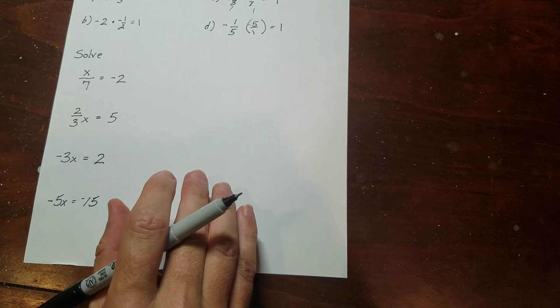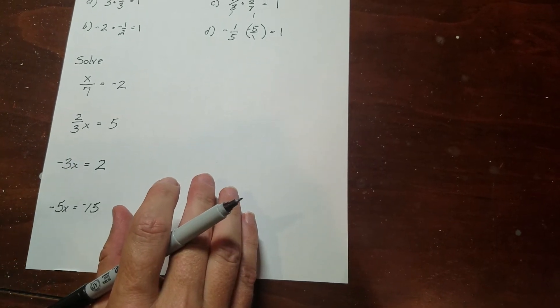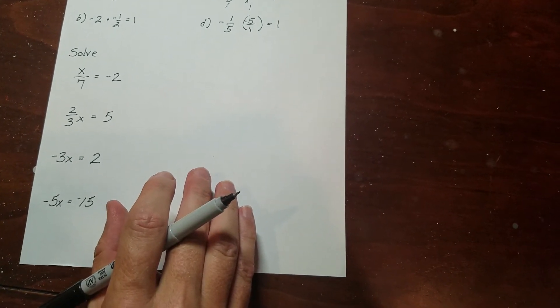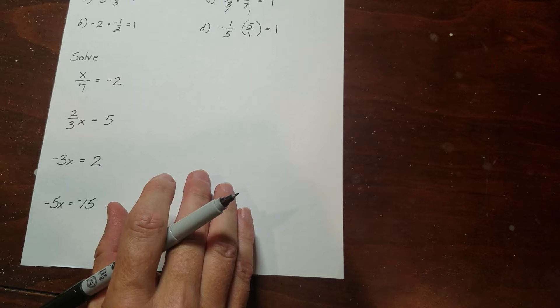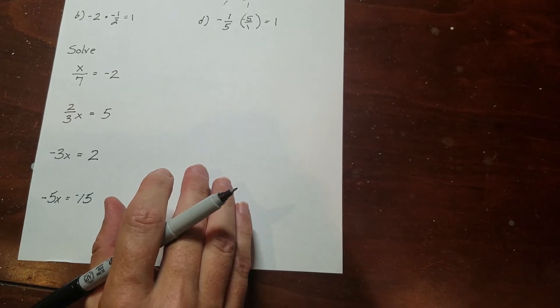We use the multiplicative inverse to isolate x, which is the name of the game when solving equations — getting the variable by itself.